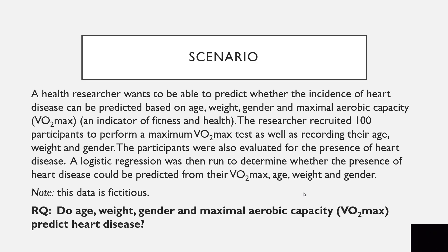Here is our scenario: a health researcher wants to predict whether heart disease can be predicted based on age, weight, gender, and maximal aerobic capacity (VO2 max), an indicator of fitness and health. The researcher recruited 100 participants to perform a VO2 max test and recorded their age, weight, and gender. Participants were also evaluated for the presence of heart disease, and a logistic regression was run to determine whether heart disease could be predicted from VO2 max, age, weight, and gender. Note: these data are fictitious. Research question: do age, weight, gender, and maximal aerobic capacity predict heart disease?